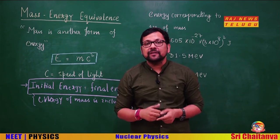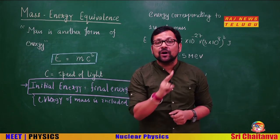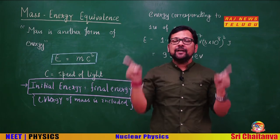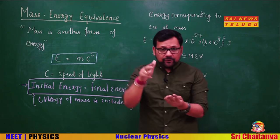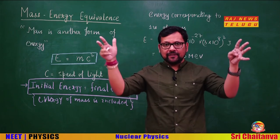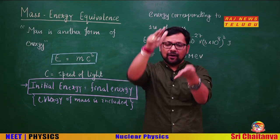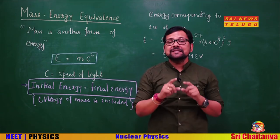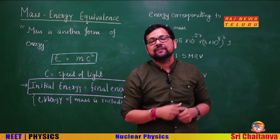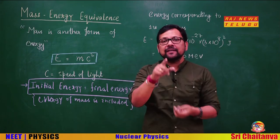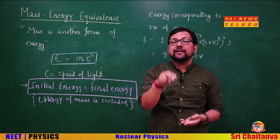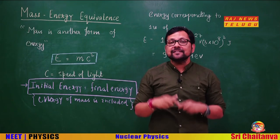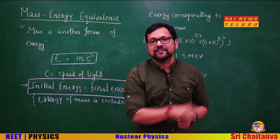What Einstein observed was that mass and energy are not different. Rather, the entire universe is energy. When you compress energy — compressing it more and more — after so much compression it becomes mass. So mass is nothing but another form of energy: compressed energy is mass. When energy is rarefied, it exists in the universe in the form of radiation.